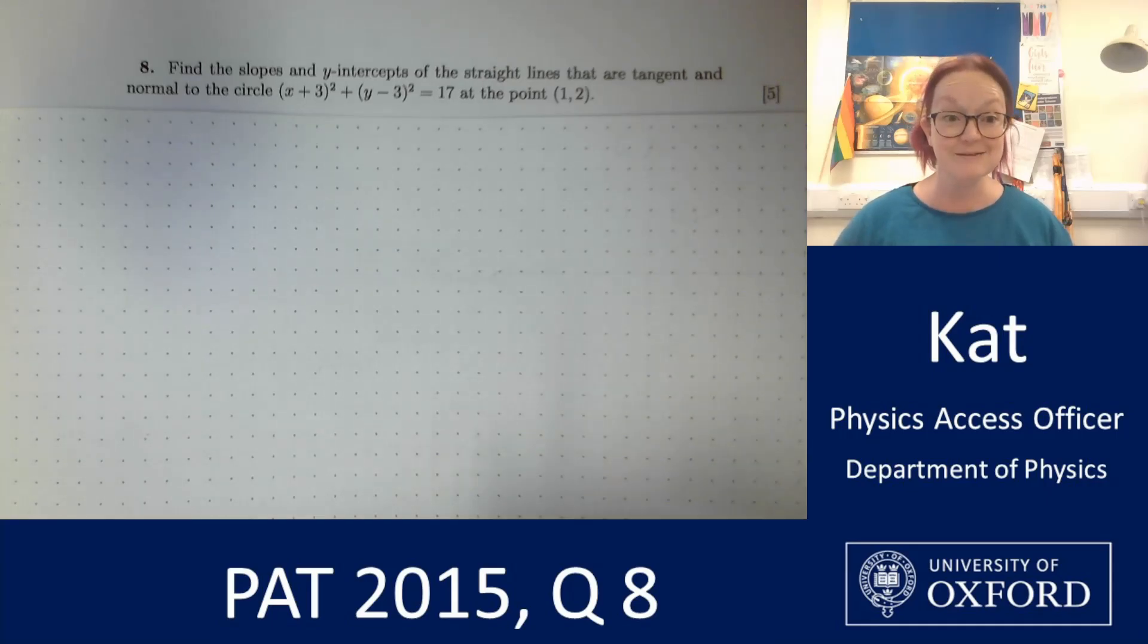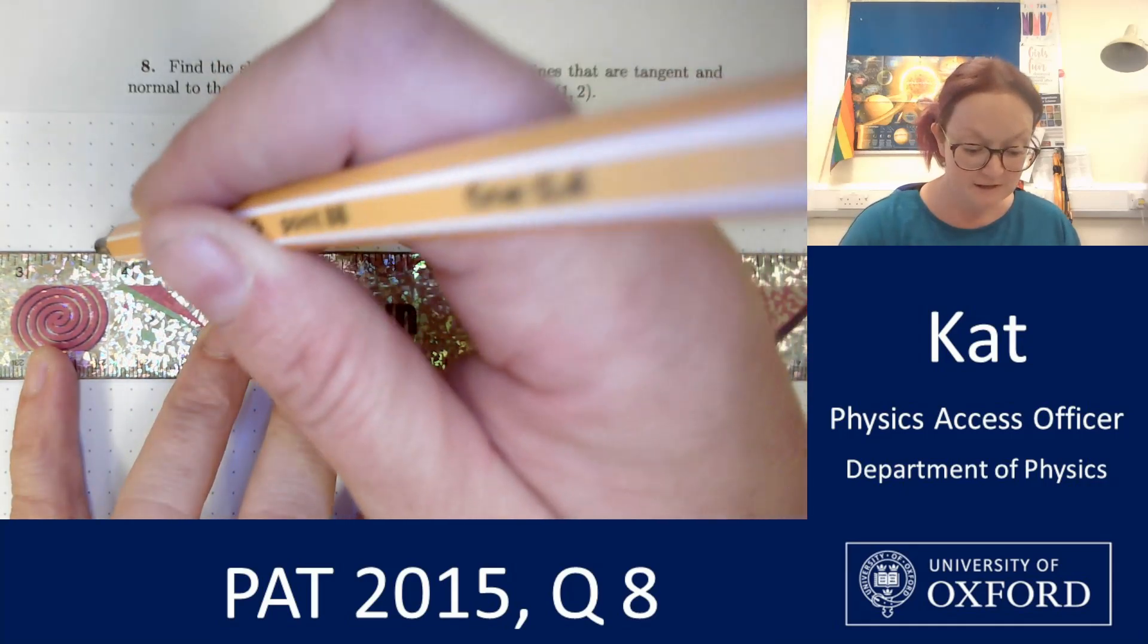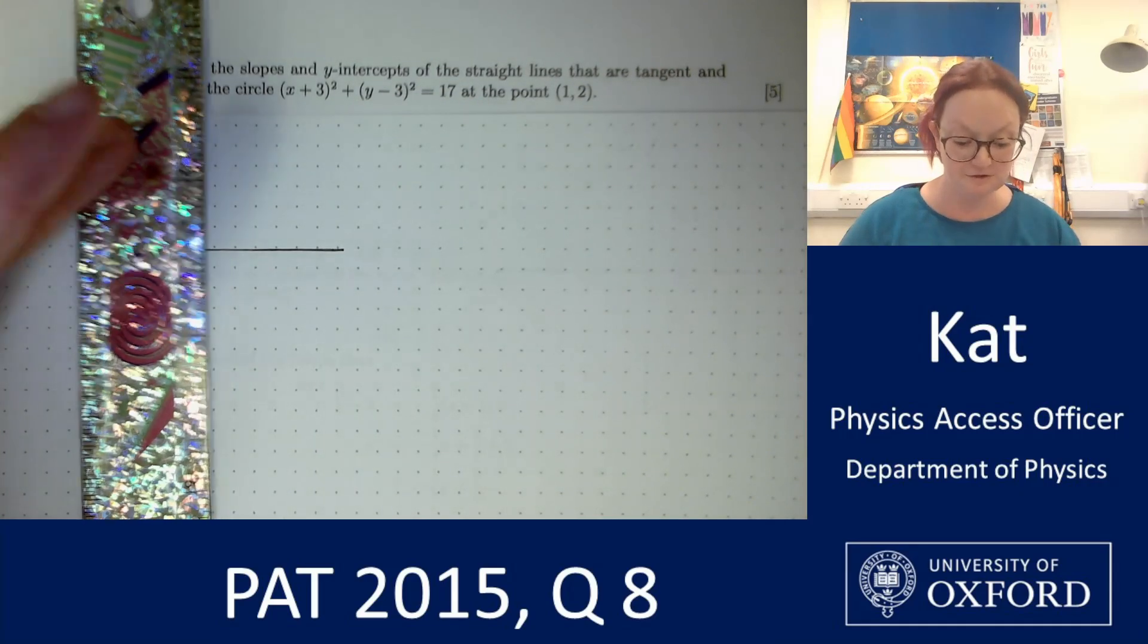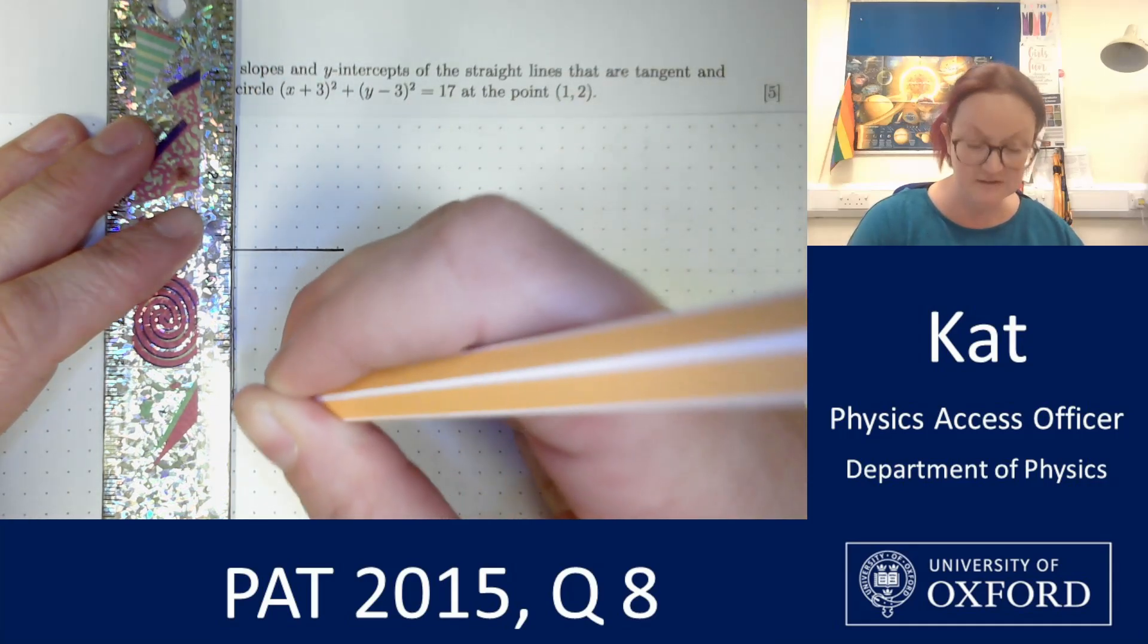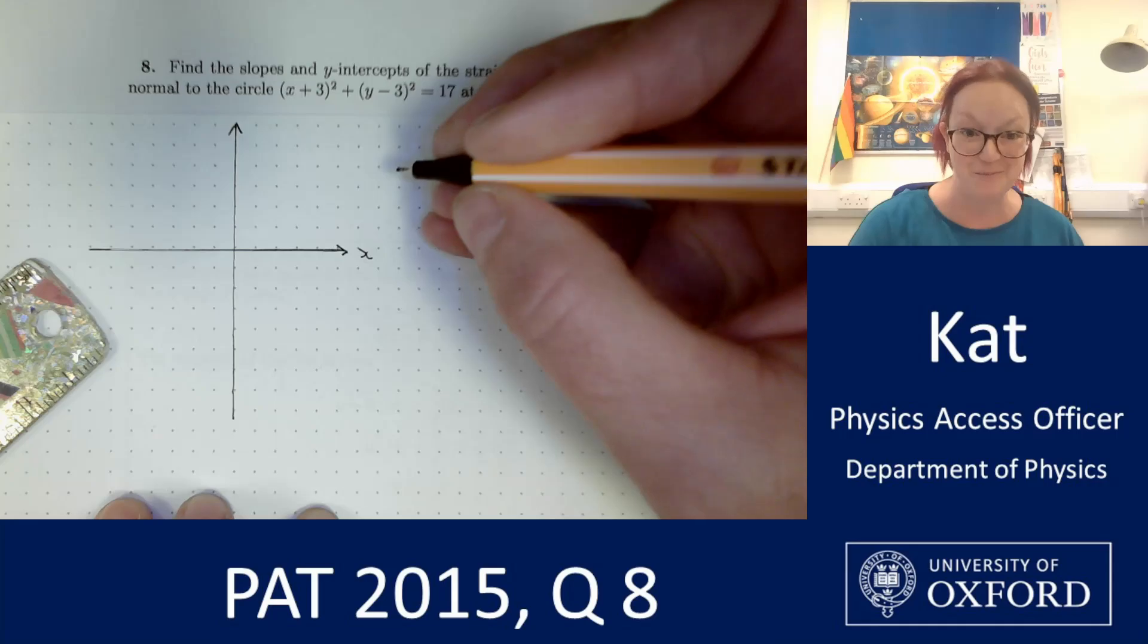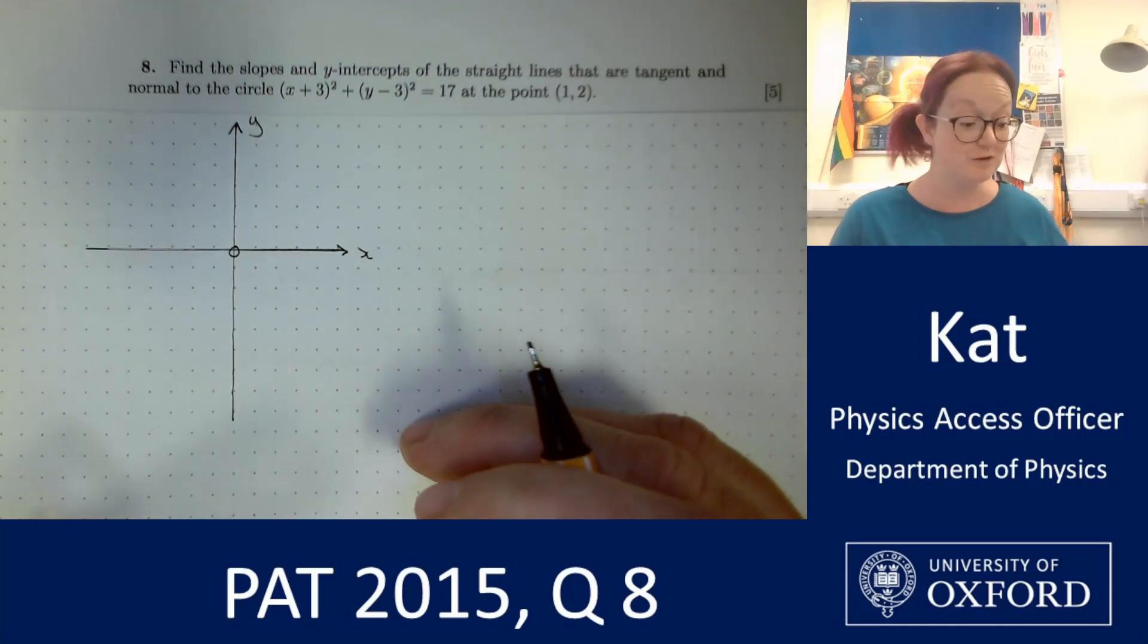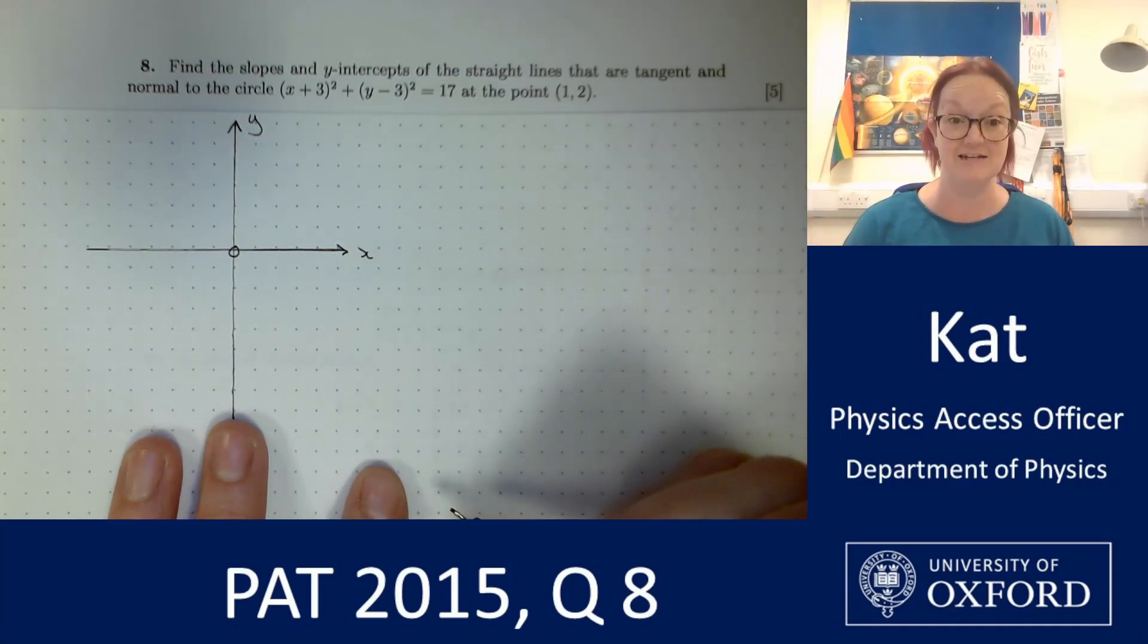The equation as I'm given it is nice and straightforward so I'm going to start by drawing a diagram. Now as I said we are not going to get your working this year, you're just going to select an answer on screen, but that doesn't mean that skills like this, drawing your diagram to help you, aren't important and that is because they help you. So your diagrams are just as important in helping you keep track of your working through the PAT regardless of how you select your answer at the end.